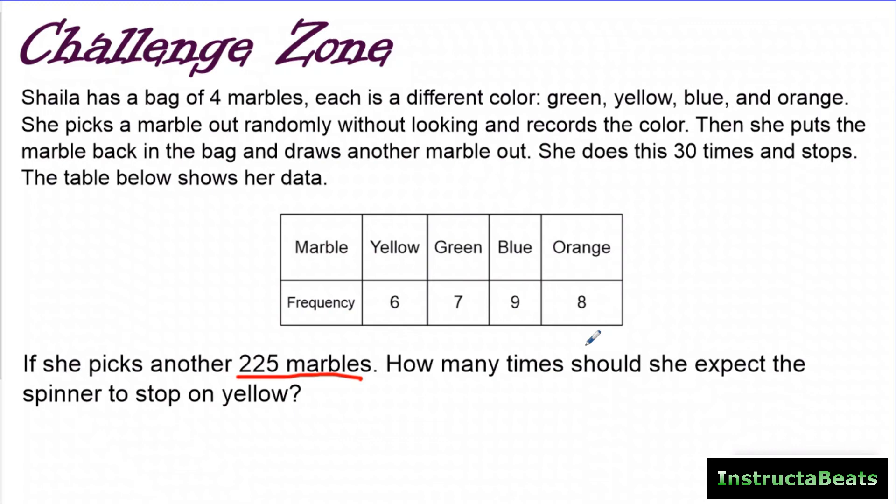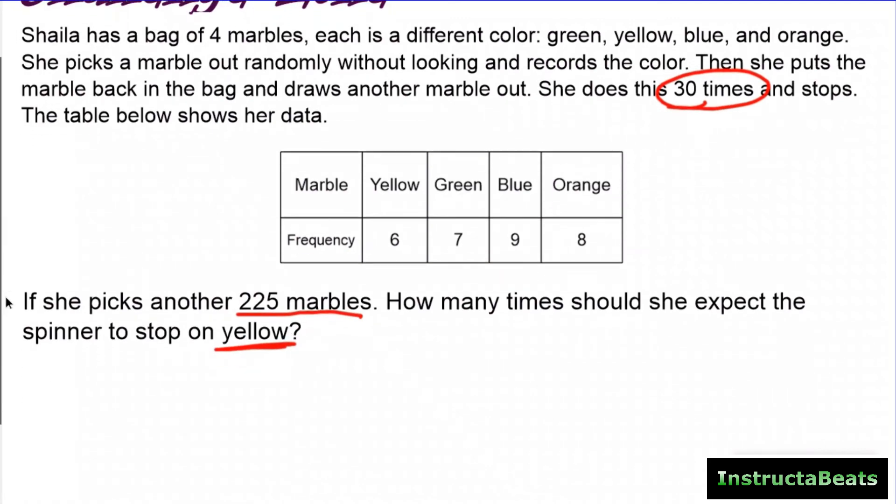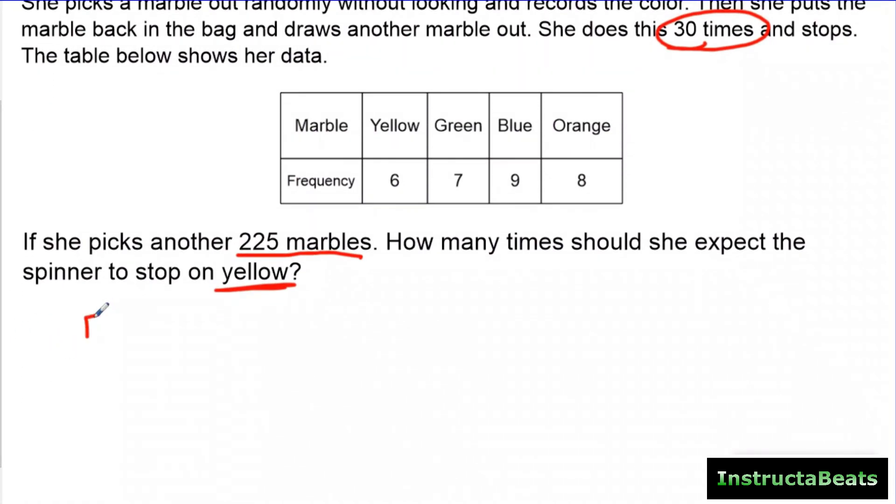So hopefully you just paused it, and now you're just checking your work to see, did I master this challenge zone question? So I know the frequency was 30 times. I know it's asking me about yellow. So the first thing I want to do is, what is my experimental probability from the 30 times of landing on yellow? Now, typically people don't put that EXP. I just did that so you can know that we're not talking about theoretical probability. Teacher choice. Deal with it. And so I know right now that she did 30 trials, and that she landed on yellow six.